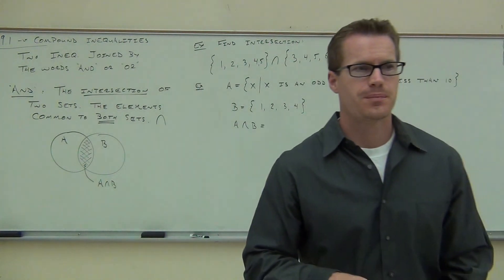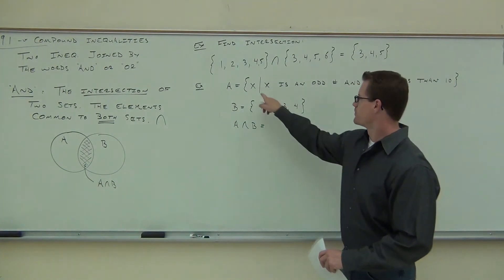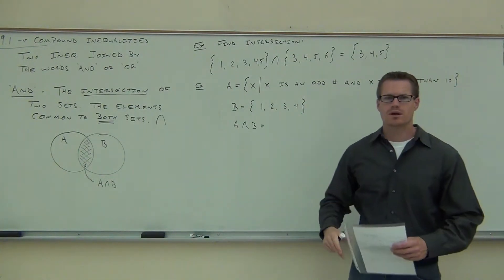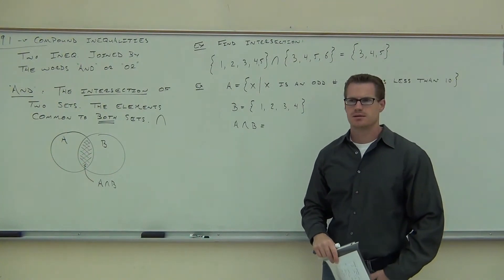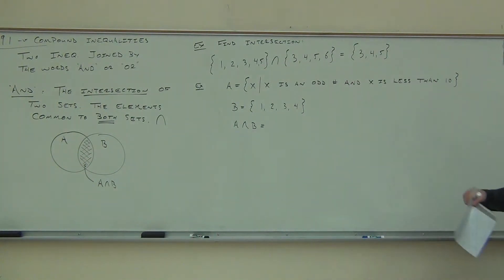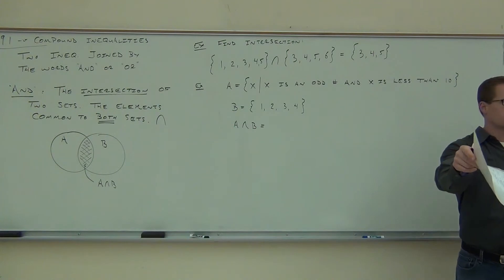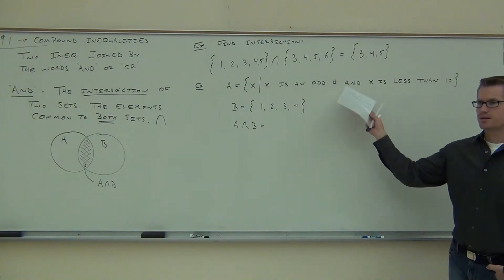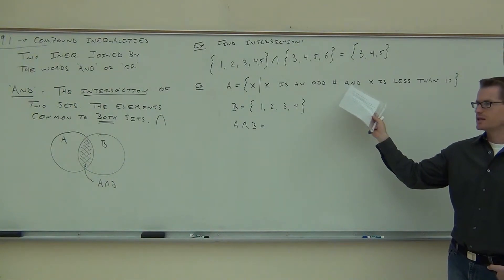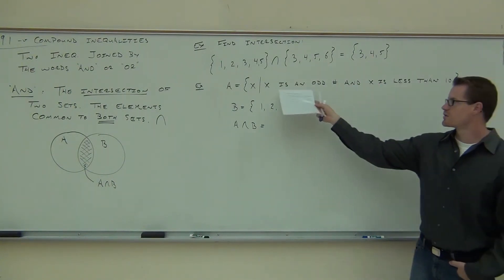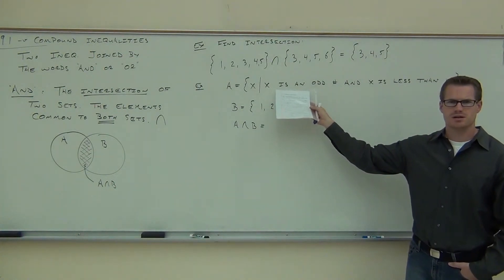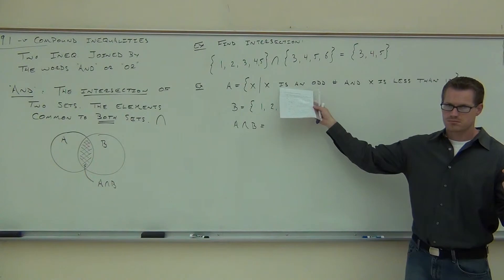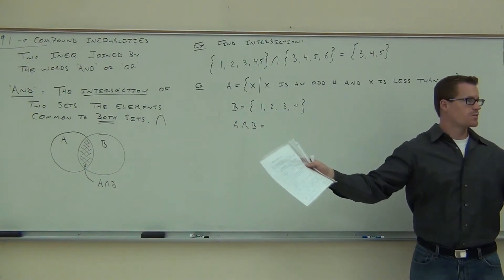Can you give me an example of numbers in set A? X is an odd number and x is less than 10. Give me a number. 7 works. What's another one? 5 works. How about 6? 6 is not in the set because it's not odd. How about 11? It's not in the set because it's not less than 10. So the numbers in set A are: 1, 3, 5, 7, and 9. Those are the numbers in that set — odd numbers less than 10.